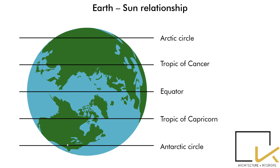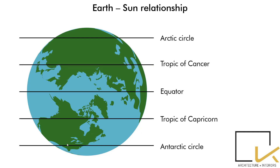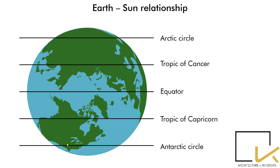Earth is divided into two hemispheres, north and south, with the equator passing through the center. The Tropic of Cancer lies in the Northern Hemisphere at 23.5 degrees from the equator. Similarly, the Tropic of Capricorn lies at 23.5 degrees south of the equator. The Arctic Circle and the Antarctic Circle lie above them in the Northern and Southern Hemisphere respectively.